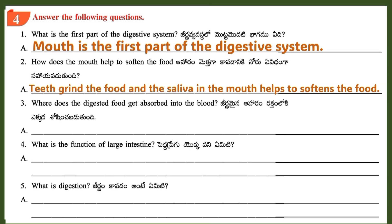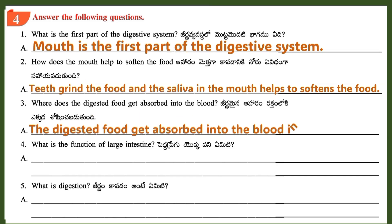Question 3: Where does the digested food get absorbed into the blood? Answer: The digested food gets absorbed into the blood in the small intestine.